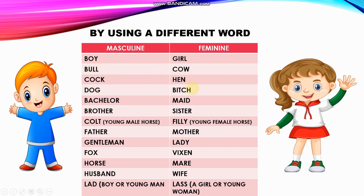More examples of forming the feminine by using a different word: cock and hen, dog and bitch, bachelor and maid, brother and sister, colt and filly — where colt is a young male horse and filly is a young female horse. Father and mother, gentleman and lady, fox and vixen, horse and mare, husband and wife, lad and lass — where lad means a boy or young man, and lass means a girl or young woman.